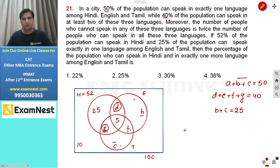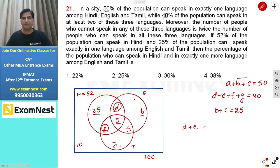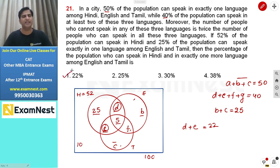The Hindi circle total is 52. Within it, A equals 25 and G equals 5, so A plus G equals 30. Subtracting 30 from 52 gives D plus E equals 22. Therefore, the answer is 22% — the first option.